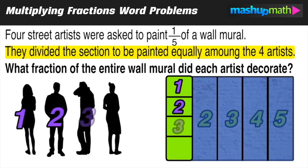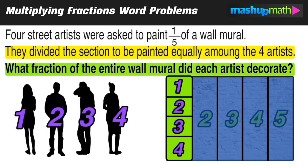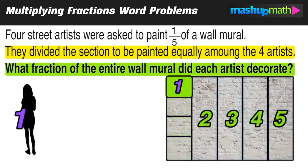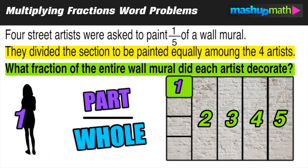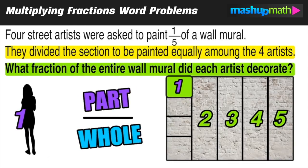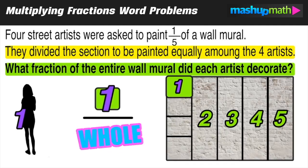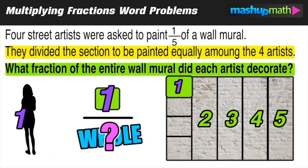Each of the four artists is decorating their own section. Now that we can better visualize what's going on, let's revisit the question: what fraction of the entire wall mural did each artist decorate? We can think of a fraction as the numerator representing the part and the denominator representing the whole. The part is that one little green section, and the whole is how many of those little green sections make up the entire mural.